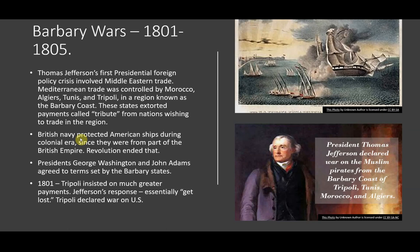Presidents George Washington and John Adams agreed to terms set by the Barbary states for payments of tribute, so American ships would be left alone and be able to trade with these countries. In 1801, however, Tripoli insisted on much greater payments. Jefferson's response was basically, get lost, we're not paying that, and Tripoli declared war on the United States. President Thomas Jefferson declared war on the Muslim pirates from the Barbary Coast of Tripoli, Tunis, Morocco, and Algiers — though really Tripoli kind of beat them to the punch. Either way, you ended up with a war between the Barbary coast powers and the United States.